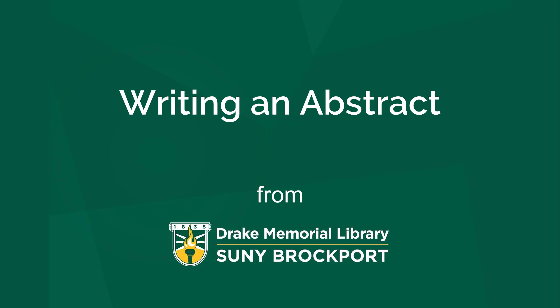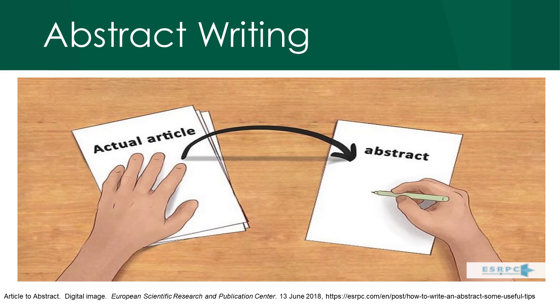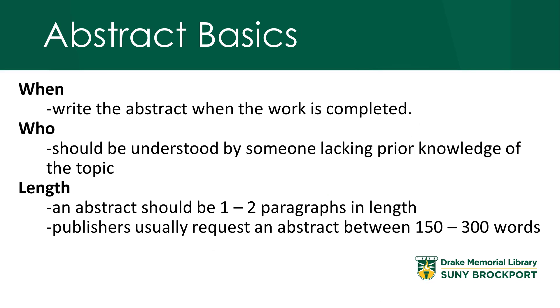Greetings from Drake Memorial Library. This video will review the basics of writing an academic abstract. An abstract is a short summary of a longer work. The abstract concisely describes the goals and results of your research so that the reader knows exactly what the paper discusses. An abstract should be brief and succinct, yet should also entice the reader.